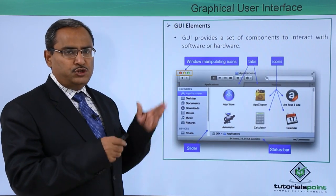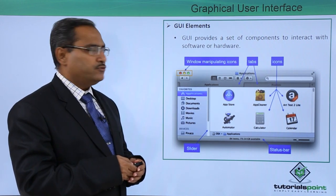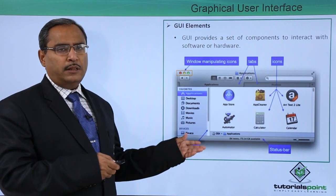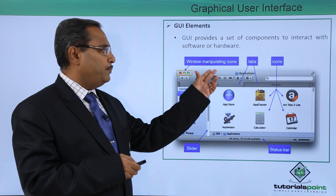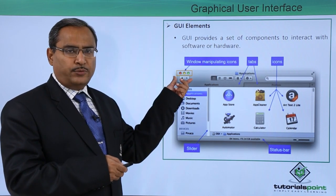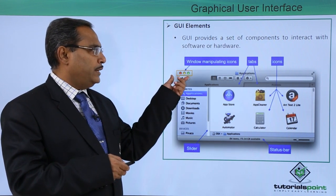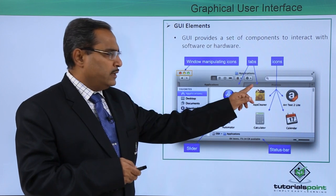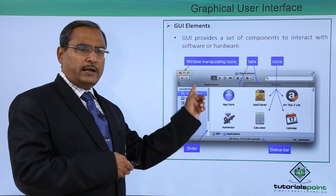First, let us go over the GUI elements. GUI provides a set of components to interact with the software or the hardware. Here we have shown one sample window. You can find window manipulating icons — we can maximize the window, resize the window, and close the window. The window also has multiple tabs; if you click on a certain tab, the respective icons will appear.